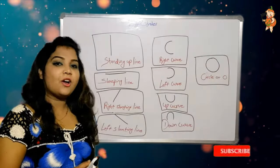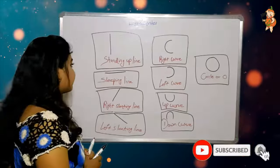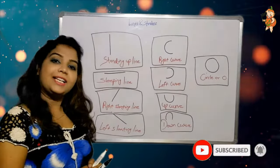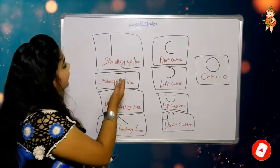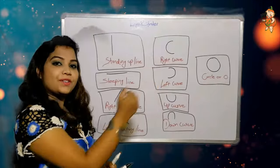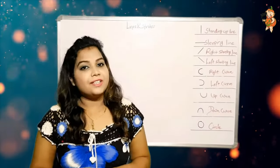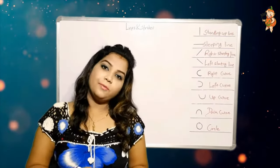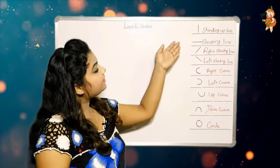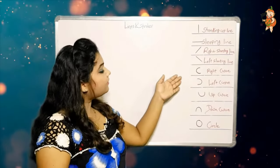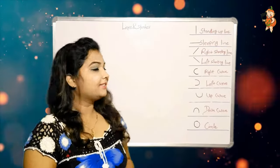I hope you understand all the lines and strokes. So let's start to make the alphabets with the help of these lines and strokes. Now it's time to make alphabets with the help of these lines, strokes, curves, and circles. Let's start.